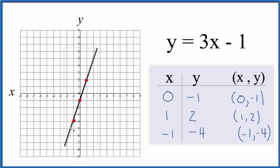And you can see we could just put a line through this, put some arrows out here to show it goes to infinity, and that's the graph for y equals 3x minus 1.